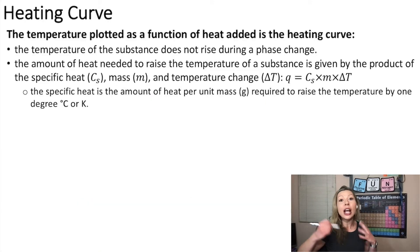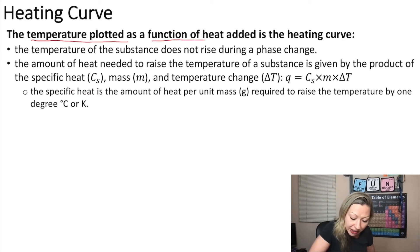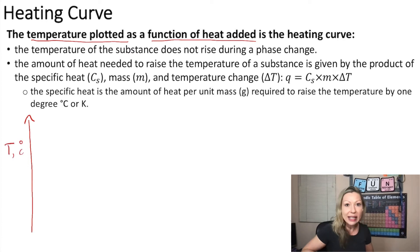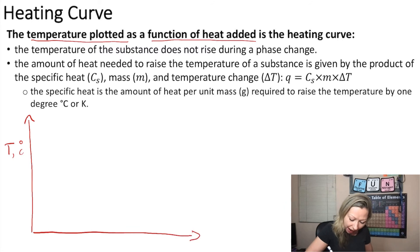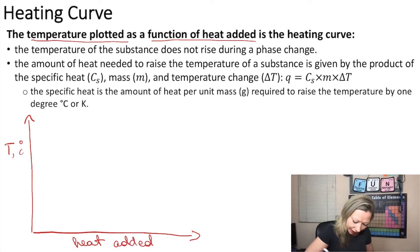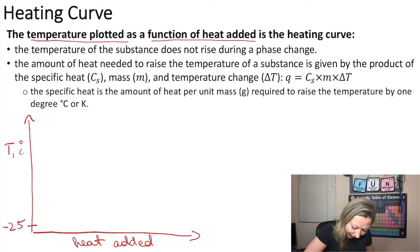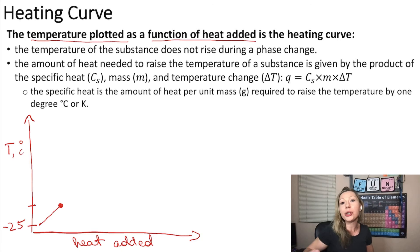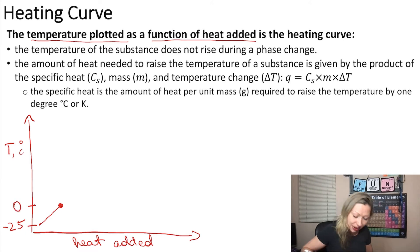Let's talk more about this using the example of a heating curve. The heating curve is simply the temperature plotted as a function of heat added to a substance. On the y-axis we have temperature in degrees Celsius, and on the x-axis we have heat added. Starting at minus 25 degrees Celsius, as we add heat to water, the temperature will rise up to the melting point. Water melts at zero degrees Celsius at 1 atm pressure.